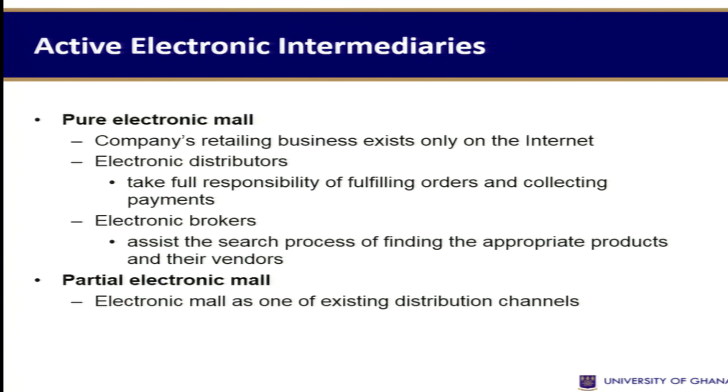When we talk about active electronic intermediaries, you can have a pure electronic mall or a partial electronic mall. For a pure electronic mall, the company's retailing business exists only on the internet — they have electronic distributors who take full responsibility for fulfilling orders and collecting payments, and electronic brokers who assist in finding appropriate products and their vendors. With a partial electronic mall, the electronic mall is only one of a plethora of existing distribution channels.